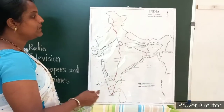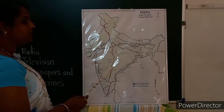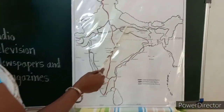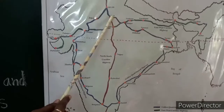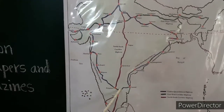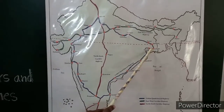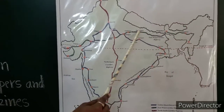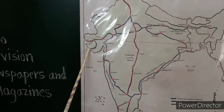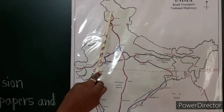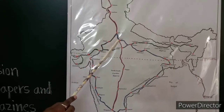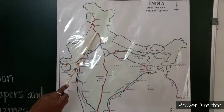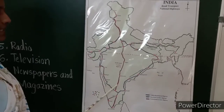In India, we have three main national highways. The first is the Golden Quadrilateral highway — you can see it here on the map. The second is the East-West Corridor highway. The third is the North-South Corridor highway, which starts from Srinagar in the north to Kanyakumari in the south. This is the longest national highway in India.